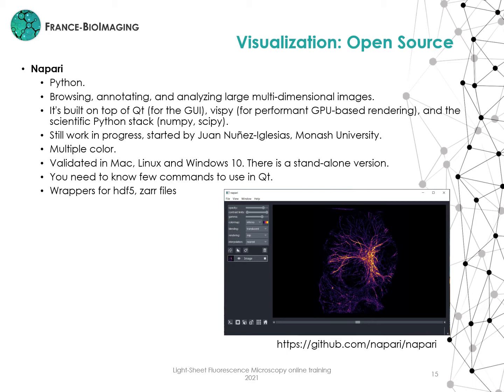One of my favorite tools is napari — it is a work in progress. It is written in Python and was started by Juan Núñez-Iglesias from Monash University. It allows browsing, annotating, and analyzing large multidimensional images. It is built on top of Qt for GUI and VisPy for GPU rendering, and uses scientific Python libraries such as NumPy. It allows multicolor. You need to know a few commands to use it, but recently there is the option to create graphical interfaces using the Magic GUI library. There are also wrappers for HDF5 and Zarr file formats. It is validated on Mac, Linux, and Windows, and there is also a standalone version.